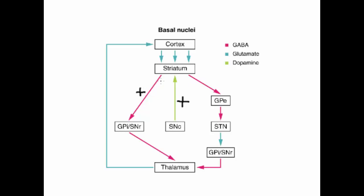That dopamine coming up to the striatum is going to excite the direct pathway. The red line represents fibers from the striatum to the globus pallidus interna and substantia nigra reticularis that release GABA — an inhibitory neurotransmitter. So that leads to an inhibition of what the globus pallidus interna and substantia nigra reticularis do. With less GABA being released by them, the thalamus is going to be less inhibited. So there will be more glutamate fibers firing to the cortex, making physical movement more likely.